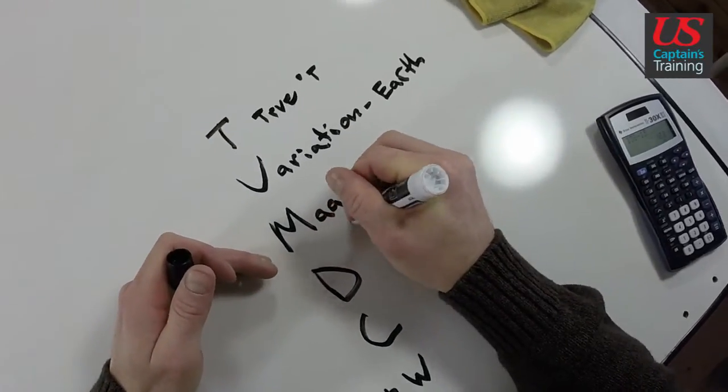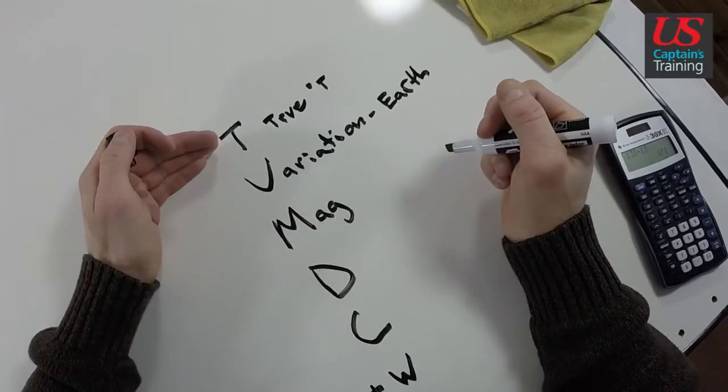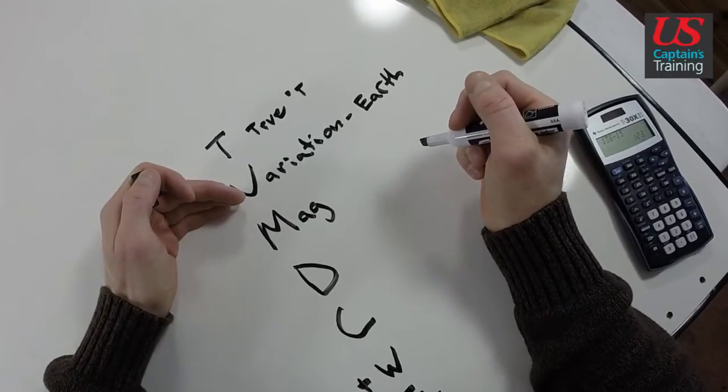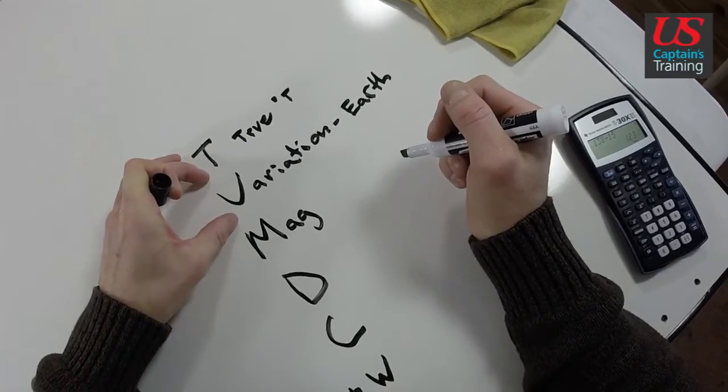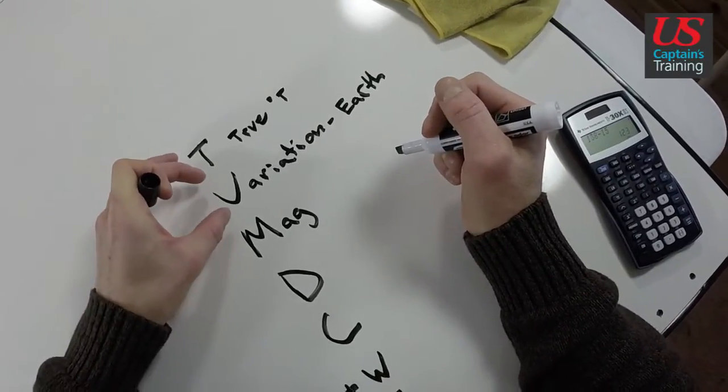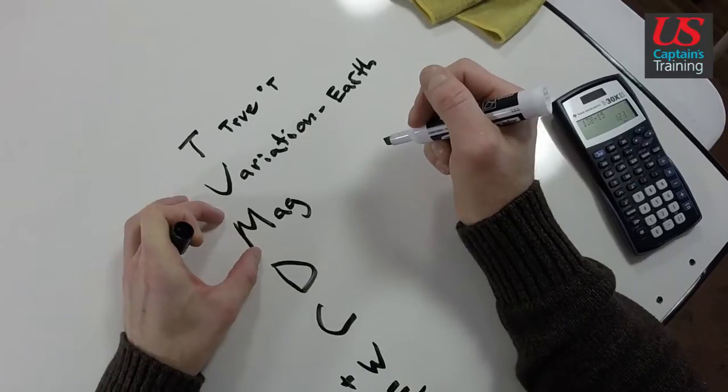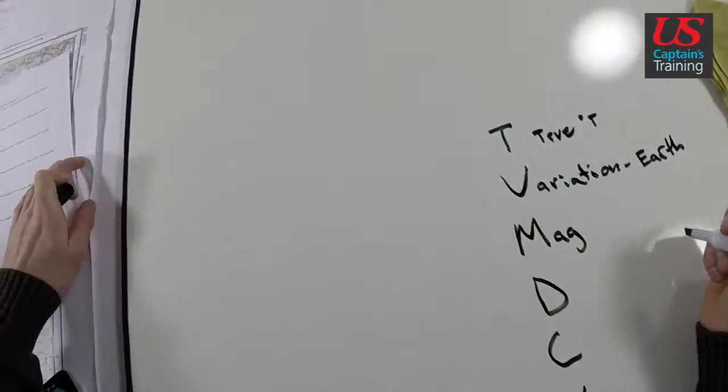Magnetic. This is true. Minus variation is magnetic. If you account for variation, so it's just true, then account for variation, it'll give you magnetic. And that's on every compass rose. Let's take a look.